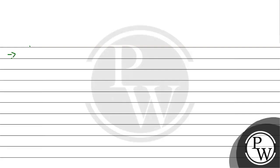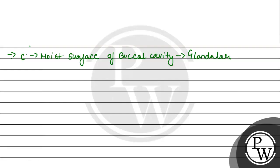Option C is the moist surface of buccal cavity, paired with glandular epithelium. The buccal cavity is lined with stratified squamous epithelium, which is a specialized version of squamous epithelium. It provides protection to the buccal cavity against abrasion.